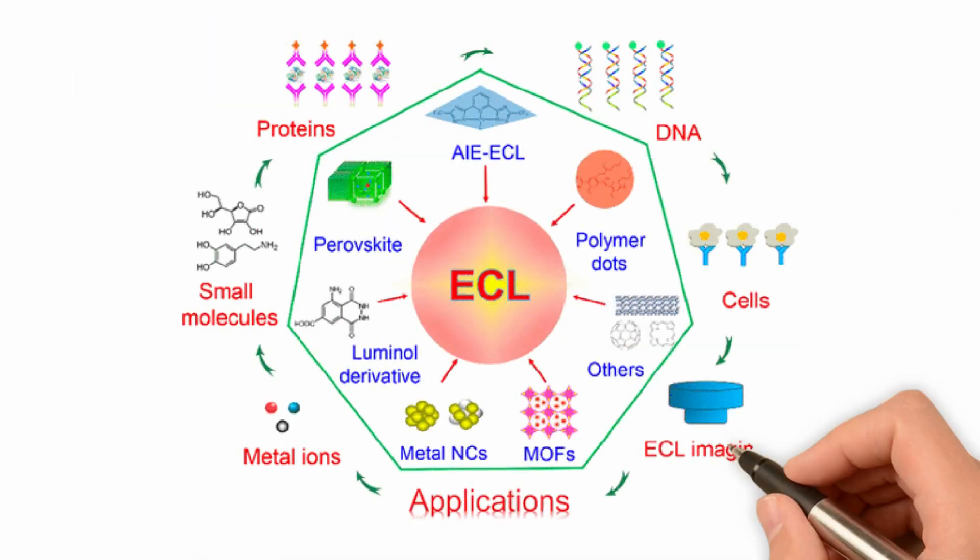In general, ECL is used in sensing and imaging. In sensing applications, many targets can be detected by ECL such as metal ions, DNA, and small molecules. Besides that, the configuration of advanced ECL microscopes and corresponding two crucial application domains, single-nanoparticle electrocatalysis and single-cell analysis, are paid significant attention.